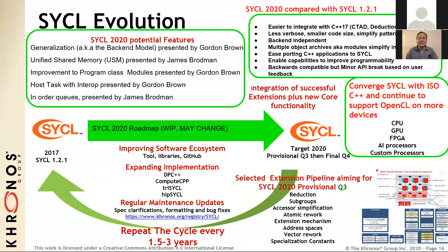This is the main slide. It shows what might be in SYCL 2020, and in the top right box the general larger philosophy that we have followed in our change from SYCL 1.2.1 to SYCL 2020. We want easier integration with C++17, less verbose language that has smaller code size, and simplify the common patterns. We wish to enable multiple backends by simplifying interoperability, while at the same time ease porting of C++ applications to SYCL, improving programmability. We aim to strike a balance for performance and stability by enabling backwards compatibility with the previous release, but we also selectively break API to achieve higher performance. We expect that breakage to be minor from SYCL 1.2.1 to SYCL 2020.